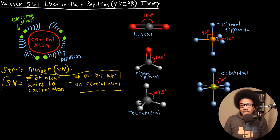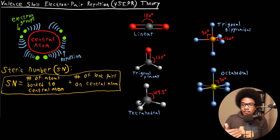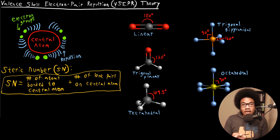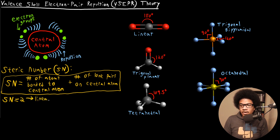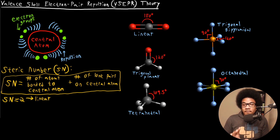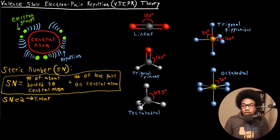First you're going to identify what is the central atom, then you're going to calculate the steric number, and from there you can use that steric number to predict the overall molecular geometry. If you have a steric number of two, that's going to be a linear geometry. These are the base geometries for each individual steric number. For now, let's consider that all contributions to the steric number are actual bonded atoms. If you've got two bonded atoms, the structure is going to be linear.